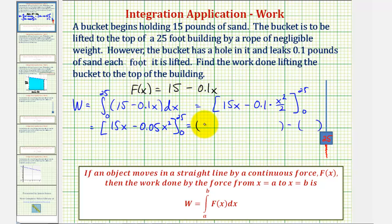And when x is 25 we have 15 times 25 minus 0.05 times 25 squared. Notice when x is 0 these are both 0.